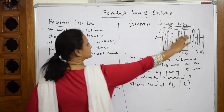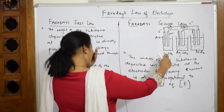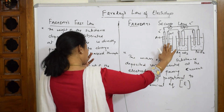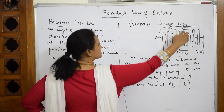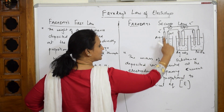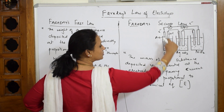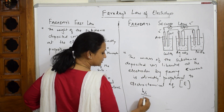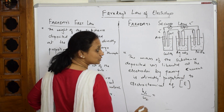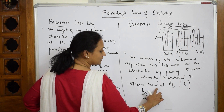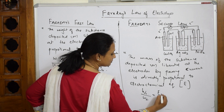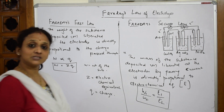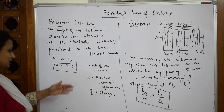Now suppose we take three cells or three electrolytes connected in a circuit and pass a certain amount of current. The weight of the substance deposited on the electrodes gives us: W1/W2 is directly proportional to E1/E2. This is your second law — the ratio of weights equals the ratio of electrochemical equivalents.